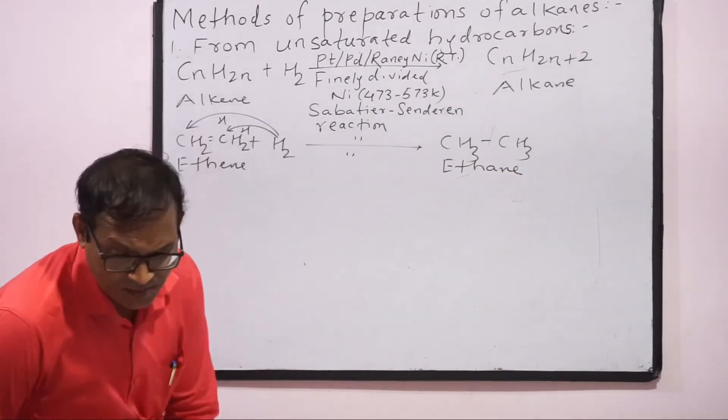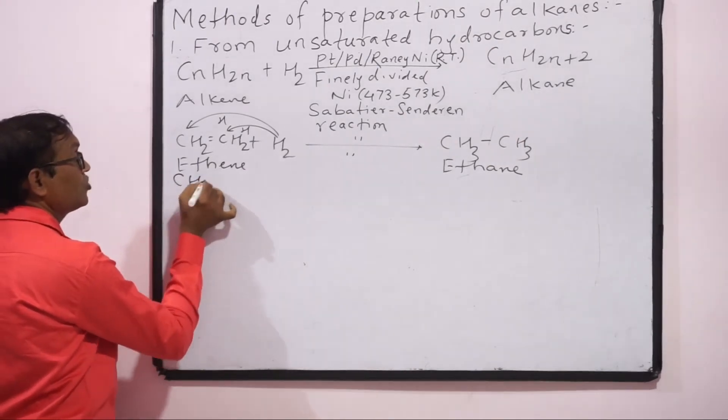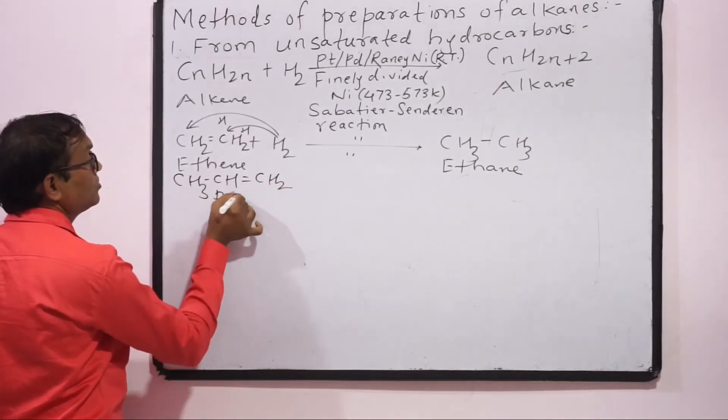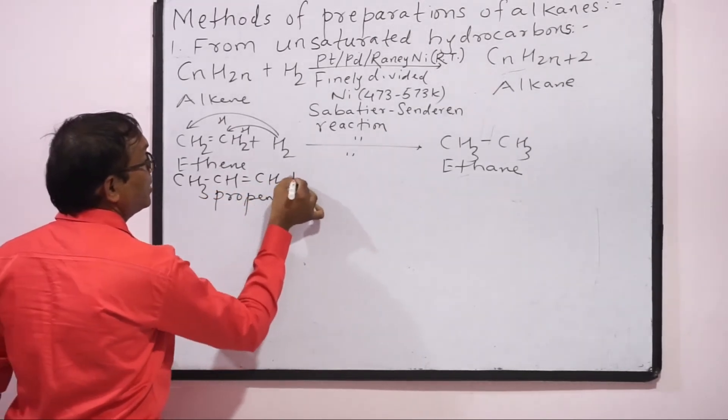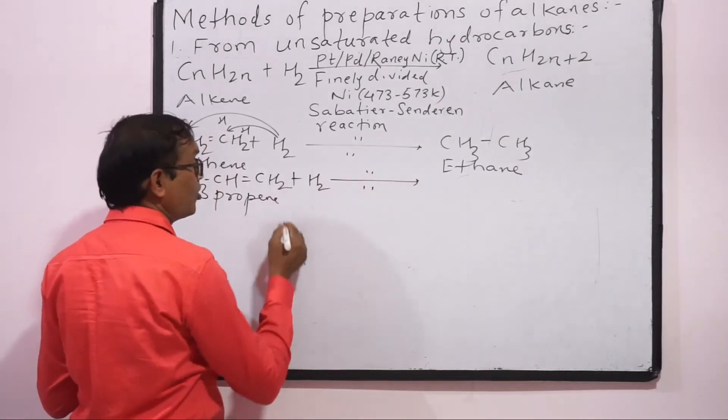Next example, what is the name? Propyne. Propyne formula: CH triple bond CH. Hydrogen gas ke saath hum heat karenge, catalyst use karenge. Product kaise baneega?